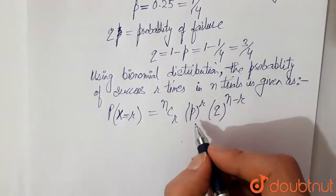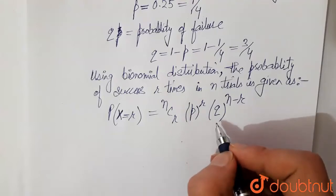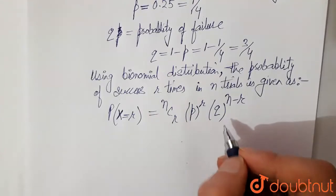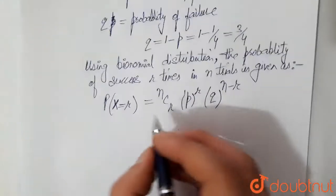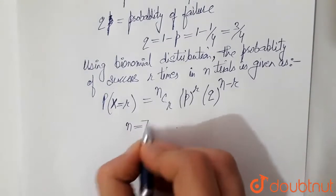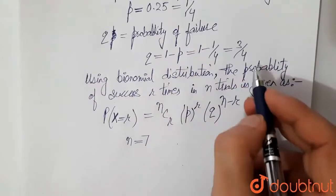Where p is the probability of success in each trial and q is probability of failure in each trial. Here number of trials is 7, so n is 7 here. And p and q are 1 by 4 and 3 by 4 respectively.